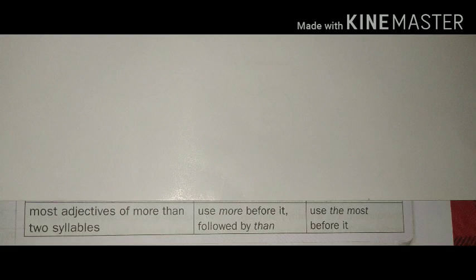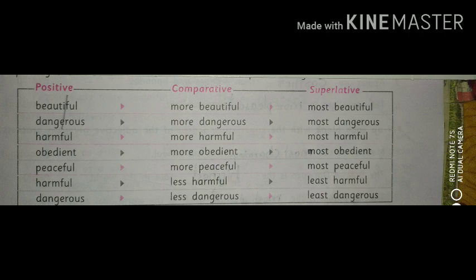Now we will study this with some examples. The first example is beautiful — more beautiful, most beautiful. You can split beautiful as beauty and full. As per the rule, it becomes more beautiful in the comparative degree and most beautiful in the superlative degree. Dangerous is divided into danger and -ous; harmful is divided into harm and -ful. More and most are used for their comparative and superlative degrees.